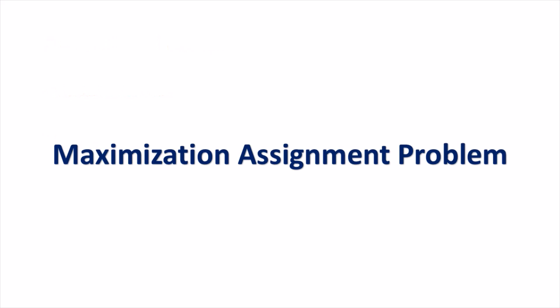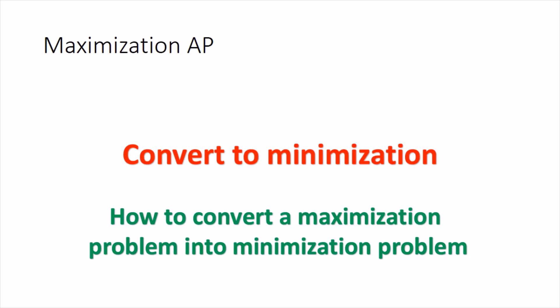First, let's take up the case where the assignment problem is a maximization type. How will we know whether the problem is maximization or minimization? This information will come from the statement of the question — we need to understand the sense of optimization by looking at the data given to us. The step then becomes: we have to first convert this problem to minimization, because the Hungarian method has been developed for a minimization type problem. Then the question arises: how to convert a maximization problem into a minimization problem?